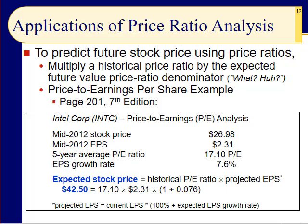So you have four ratios: price divided by earnings, price divided by cash flow, price divided by sales, and price divided by book value. Slide number twelve shows how we can actually predict future stock prices using these price ratios. You multiply a historical price ratio by the expected future value of the ratio's denominator. The calculations are very easy — you plug in the numbers and the math is straightforward.